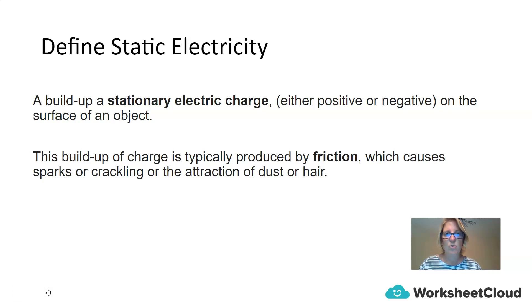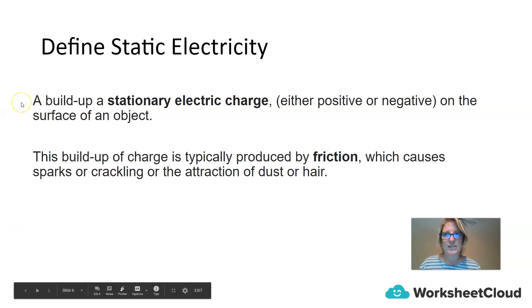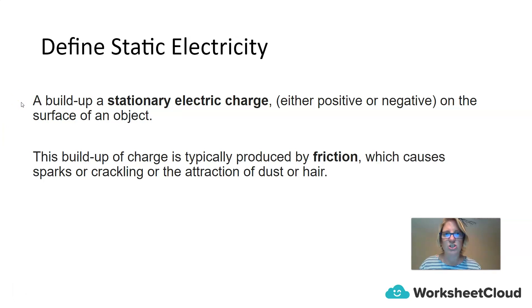It's very important that we understand this definition. Static electricity is a build-up of stationary charge. This charge can either be positive or negative, and we'll find this charge on the surface of an object. The build-up of this charge is typically produced by friction, and that is what causes the sparks, or the crackling, or the attraction of dust or hair.